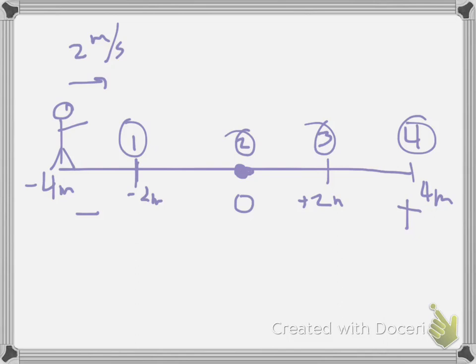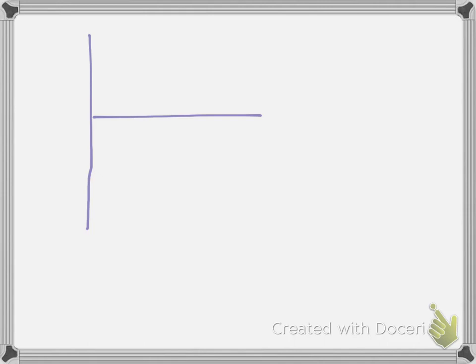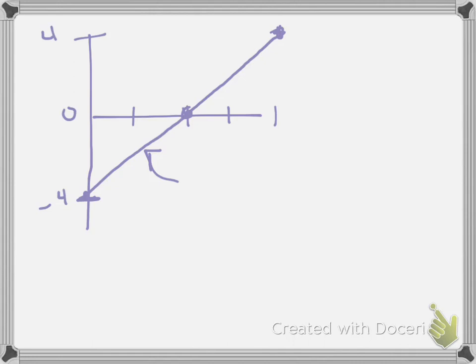What would that look like on a graph? We can graph it as position versus time with zero right in the middle, since we started at negative four. After two seconds he's at zero, and two seconds later he's way up at a positive position. That is still constant velocity. But notice: in this area here, we have a negative position but a positive velocity. What happened right there? I'll leave that as a question for after you watch the video.